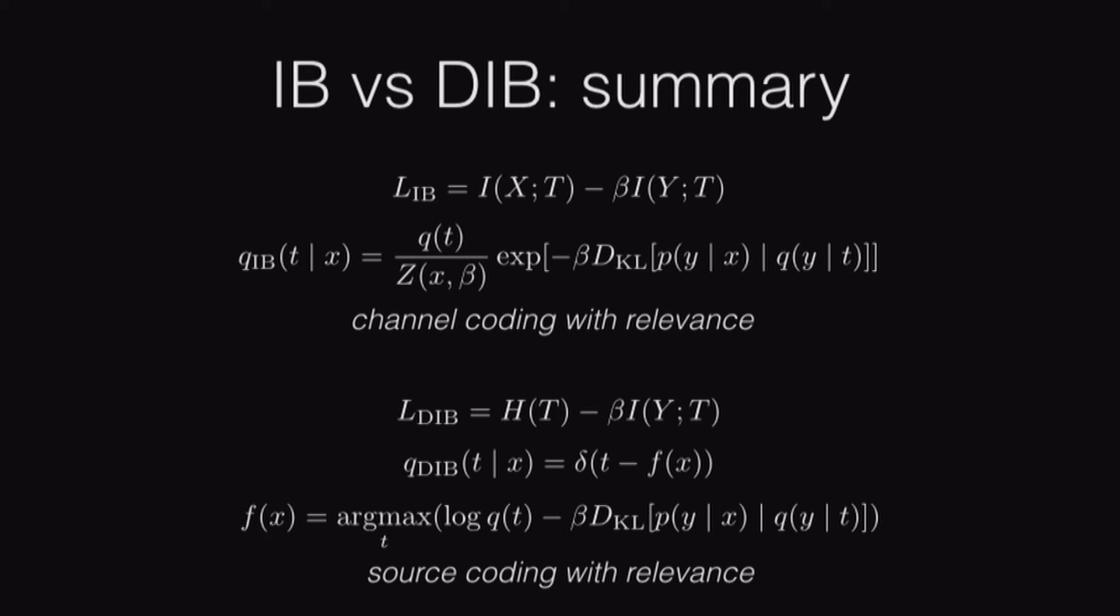That's the theory, but how do these two methods differ on data? Well, how do we even compare them on data first? We had that IB plane from earlier that I showed you, map compression measure versus relevance measure versus compression measure. We can do the same thing with DIB, same relevance measure, but we just change the x-axis to be entropy. In the IB plane, of course, IB will be optimal. In the DIB plane, DIB will be optimal. They're defined that way, but we can still plot solutions from both in the same planes and compare them.